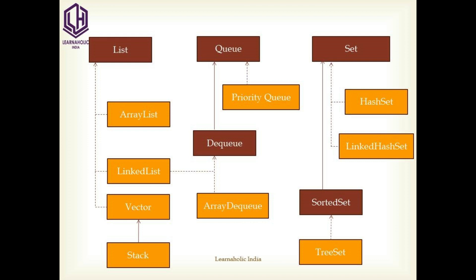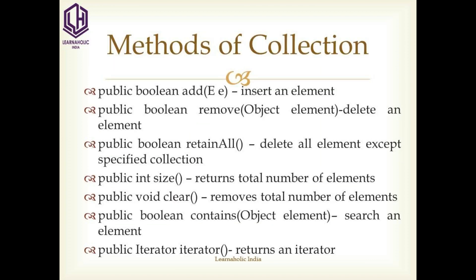Which methods are provided by the collection? The public boolean add method inserts an element. The public boolean remove(Object element) method deletes an element from the collection. The public boolean retainAll method deletes all elements except those in the specified collection. The size method returns the number of elements present in the collection. Public void clear removes all elements from the collection. The public boolean contains(Object element) method searches for the specified element.